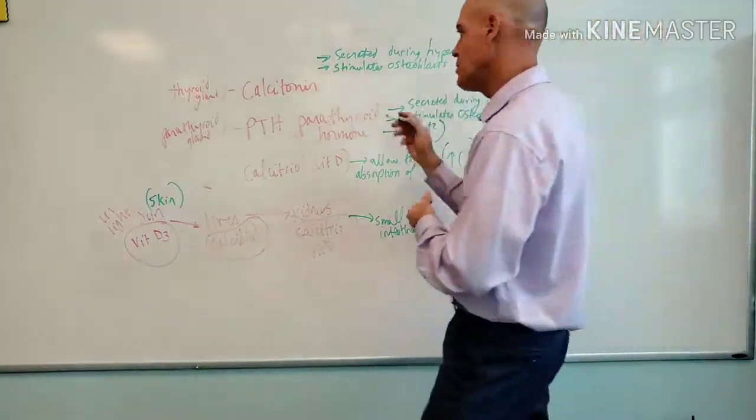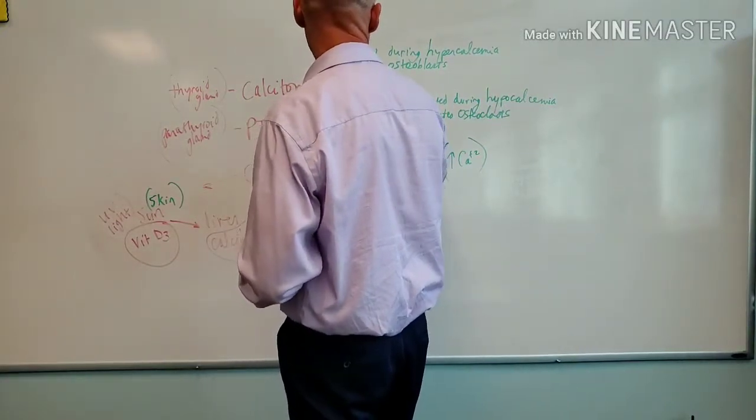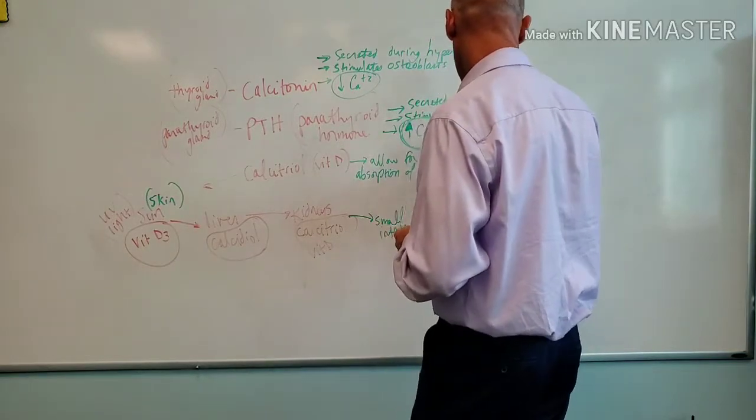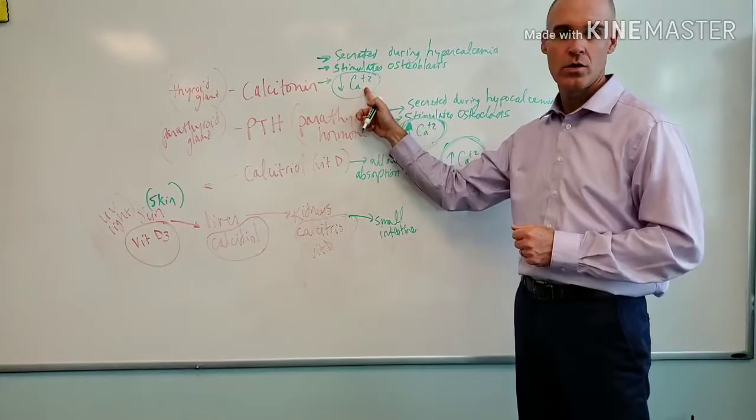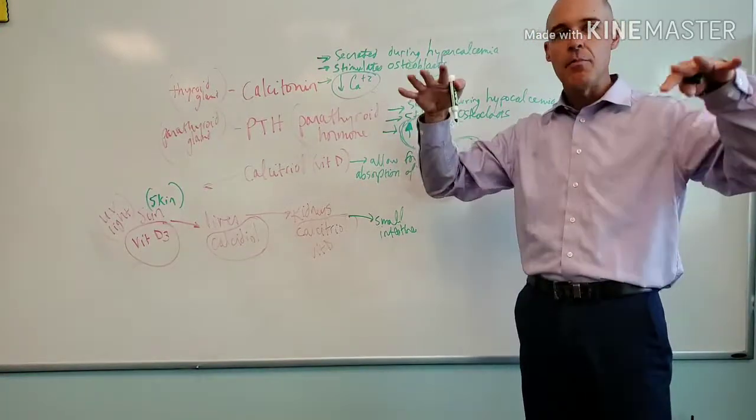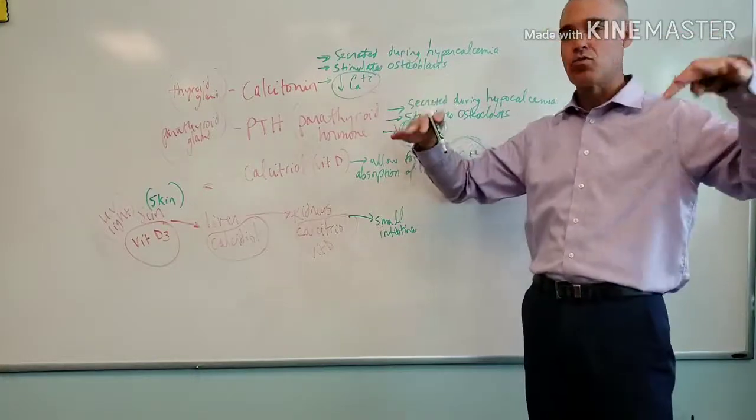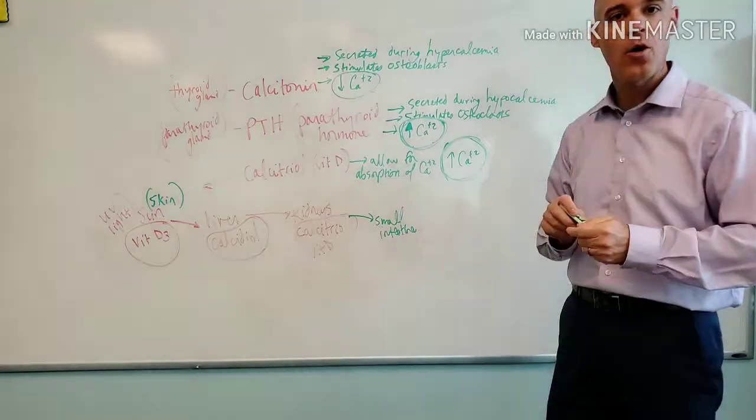So osteoblasts are going to build bone. So what the calcitonin is going to do is it's going to trigger these osteoblasts to basically take some of that excess calcium and build bone with it, hence lowering the calcium levels. So that is our function for calcitonin. It is going to lower calcium levels. So obviously the body is working all the time to regulate calcium balance for homeostasis.